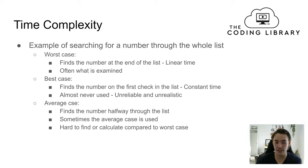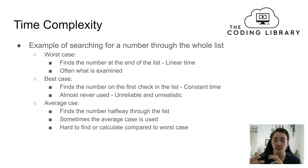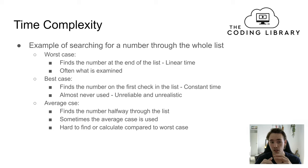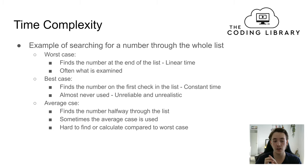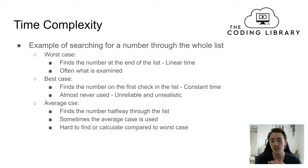The average case is the average time complexity across a number of tests. For this example, the average case is finding the number halfway through the list. The average case is sometimes used to measure time complexity, but most often we use the worst case because the average case is hard to calculate — it depends on the algorithm, changes a lot, and requires many different tests rather than just calculating a single worst case.